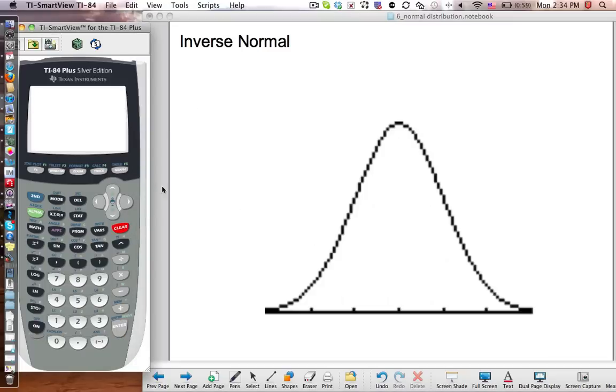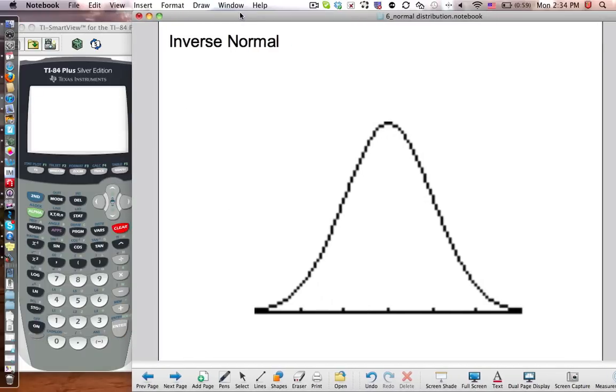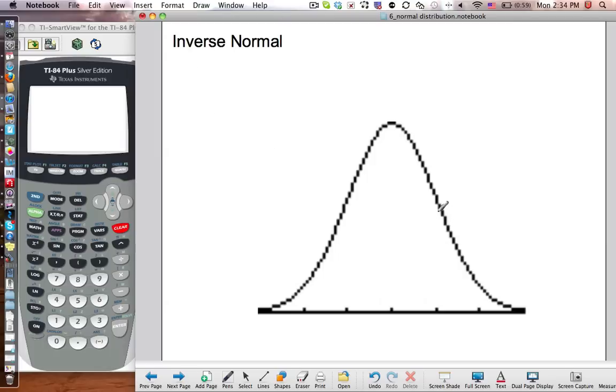So the next thing is an inverse normal. Inverse normal is basically working backwards. Let's say, the question will say something like, given the mean, so 100 and 100 again, and a standard deviation of 10, given the probability, let's say you want to be above the 95th percentile. So what's your score need to be? This needs to be 5%. So what does my score need to be in order to have a better IQ than 95% of the population? So what's that score right there with only 5% above and 95% below?